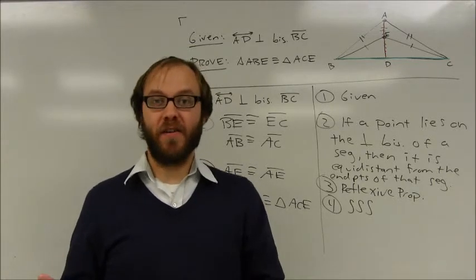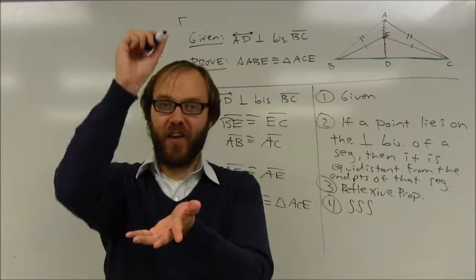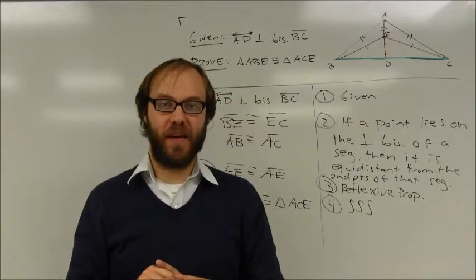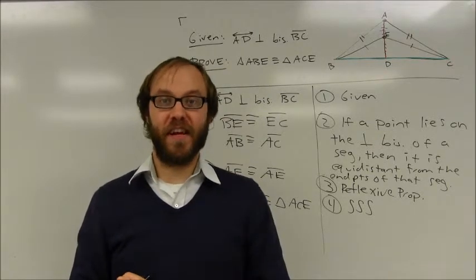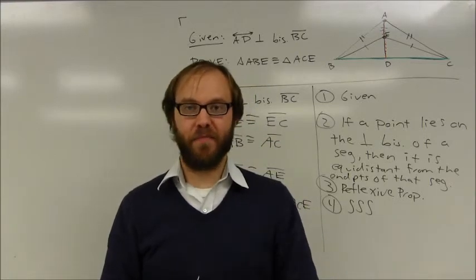So again, it can be very quick. Just look along that perpendicular bisector. Any point along that perpendicular bisector is going to be equidistant from the endpoints of the segment. And that can give you some congruent parts that make proving triangles congruent very quick and very easy. Thank you.